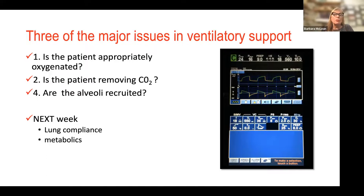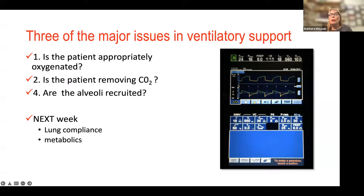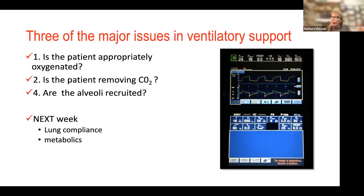Something else critically important is how fast we give the tidal volume to the patient — that's the flow rate. If we give the tidal volume slowly, they may not have time to exhale. The rate of delivery of gas is called the flow rate — that's V with a dot and 'max' next to it. Normal flow rate is 60 to 80 liters per minute. Flow rate is how fast I deliver the gas into the lung — flowing it to a target of either pressure or volume.